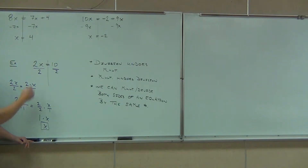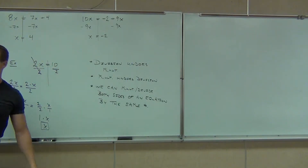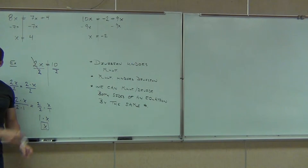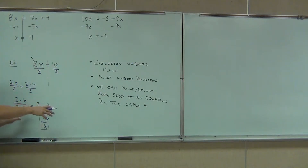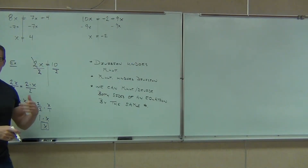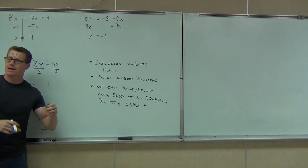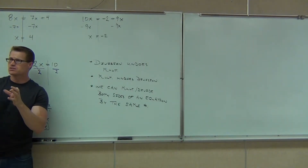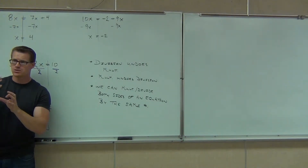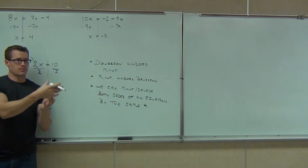Your teacher just tells you to cross those out. We're having fun, right? This is the reason why, though. We're not going to show this — we're just going to cross out the numbers. But I want you to understand why we can do that: it's because we're actually dividing 2 by 2 and making a 1 out of that and multiplying by 1.